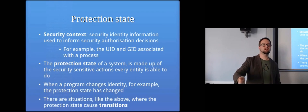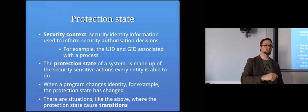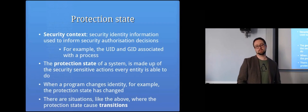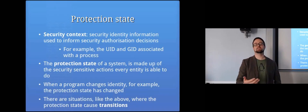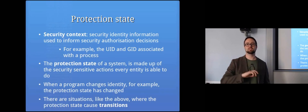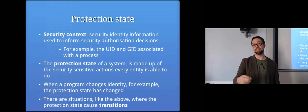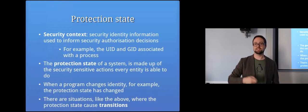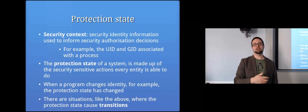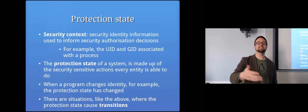On a computer, you might change your security context — like changing your name badge. For example, Umar might have permission to sometimes act on Taz's behalf. Taz may have said it's fine, and given permission to access a file. You then assume that identity, putting Taz's name badge over your own. In that situation you've assumed a different identity — that's a transition in the protection state of the system.